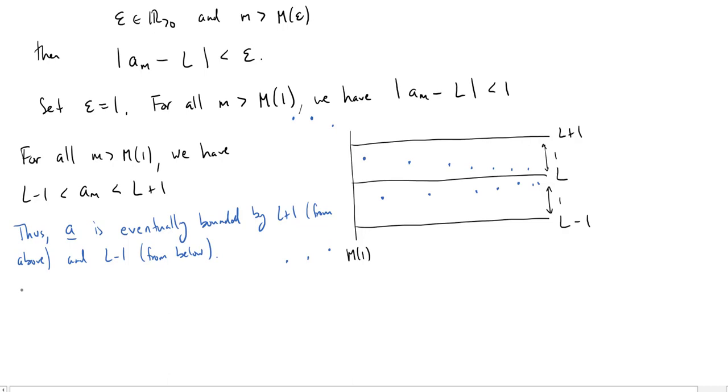So we can define, let's call, how about we'll say u, this is going to be our upper bound. We're going to define u to be the maximum value of all of the terms, a_1, or maybe we'll start at 0, who knows where it starts, a_0, a_1, through a_m of 1.